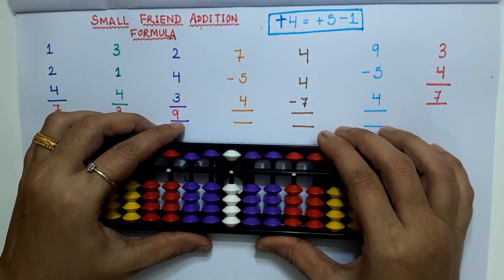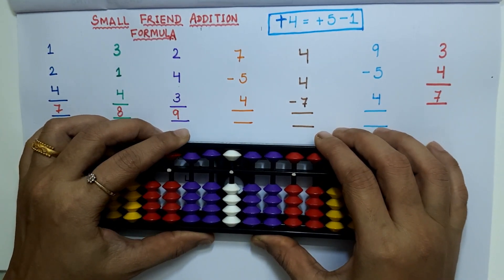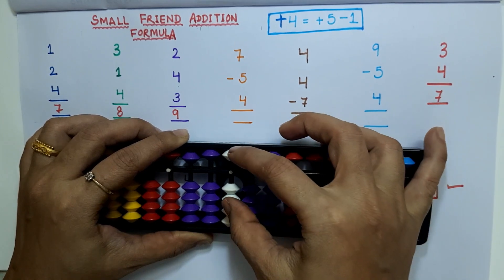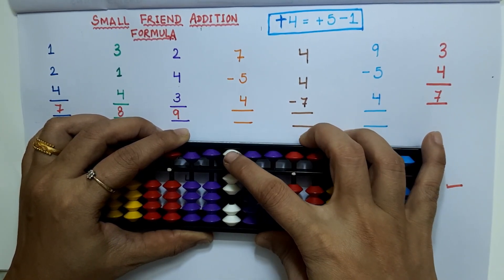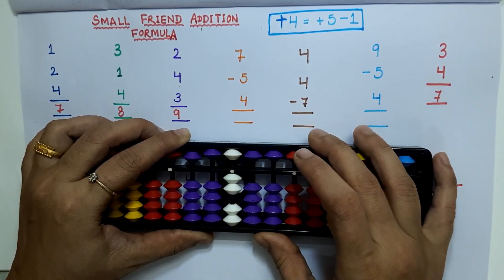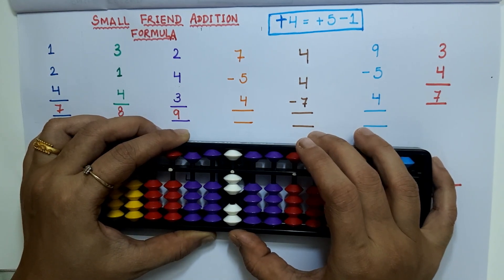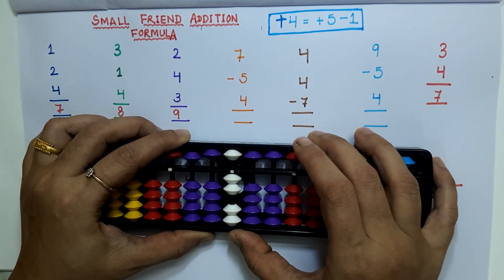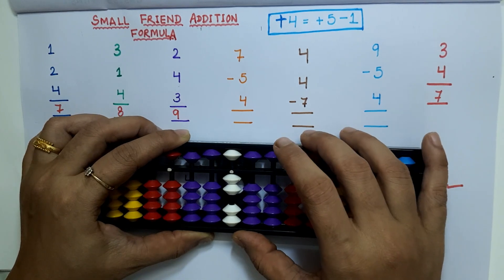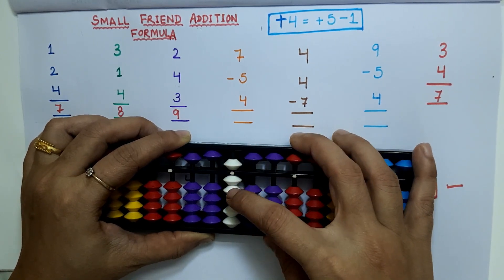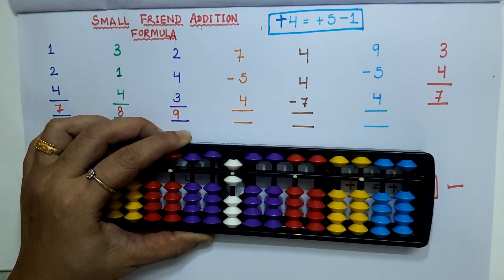The fourth example is 7 minus 5 plus 4. We don't have 4 bits available here to add, so we apply the small friend addition formula: plus 5 minus 1. The answer is 6.